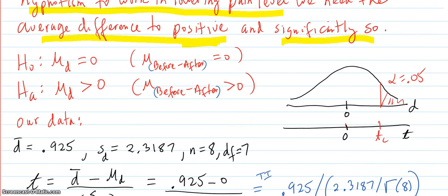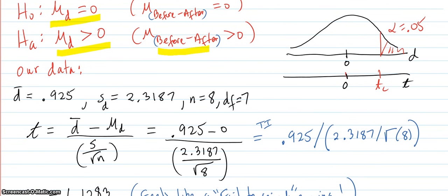So our hypothesis design is: the null hypothesis is that the mean difference of the matched pairs would be zero, and the alternate is that it would be greater than zero because we're doing before minus after and we want the before to be greater than the after if the hypnotism is to lower the pain level.